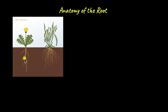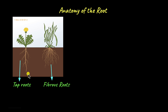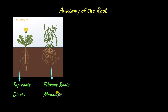There are two types of roots: tap roots and fibrous roots. Tap roots are seen in dicot plants like sunflowers, whereas fibrous roots are seen in monocot plants like grass. Roots function to absorb water and nutrients from the soil, anchor a plant in one place, store food, and also produce some plant growth regulators.